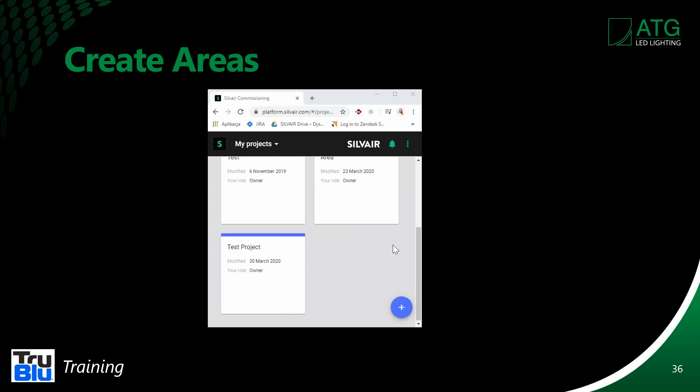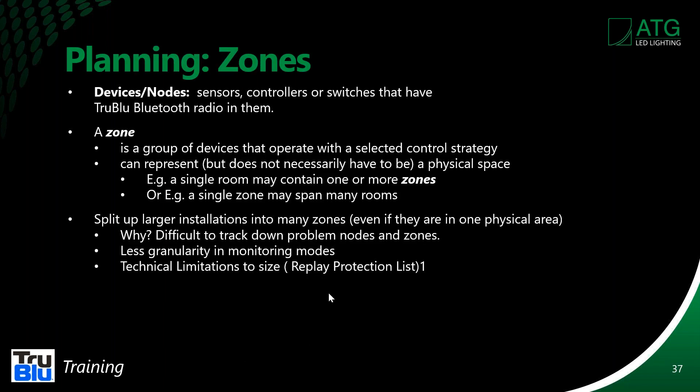You can create areas, give them a name, and then plan the zones. We have sensors, controllers, and switches. A zone is a group of devices that operate with the same control strategy — that's the main point to remember. All the fixtures in a particular zone are going to operate on the same control strategy. You can also split up larger installations into many zones.